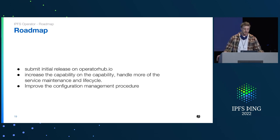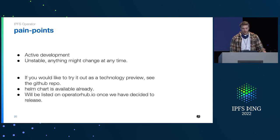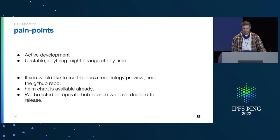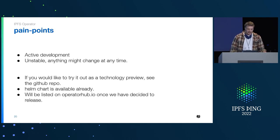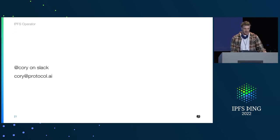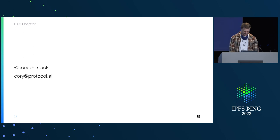That'll invite people to use it. If you do want to try it, there is code available on the GitHub repo. There are Helm charts you can use to install it, or you can run through the instructions and do make install and it'll install into your cluster. Expect in the next couple of weeks this will be on operatorhub.io, which is like an app repository for Kubernetes operators. If you have any questions, I'm Corey on Slack — there's my email address also. Feel free to contact me or come say hi. Thanks.